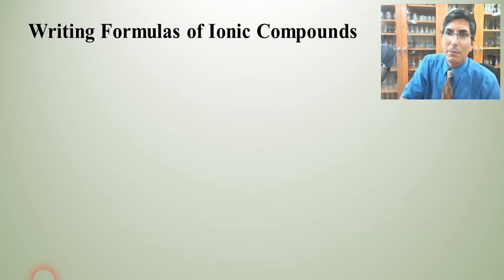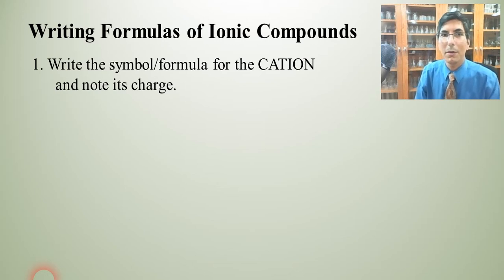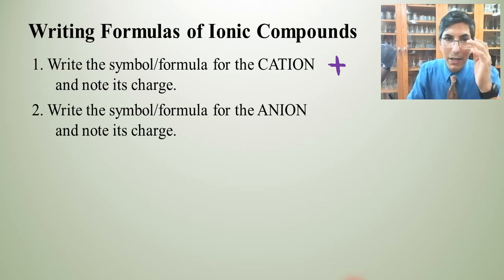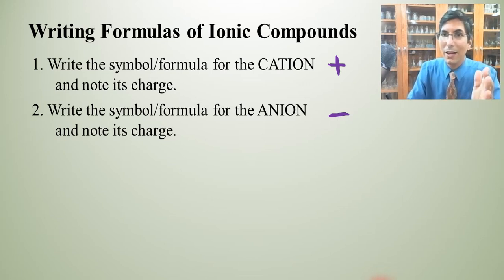Let's go on to something perhaps a bit more complex. We're going to write some formulas of ionic compounds. There are five steps involved. The first step is to write the symbol or the formula for the cation and note its charge. Cations are always positive in nature and they are also always written at the beginning of a compound or the beginning of a name. The second step is to write the symbol or the formula for the anion and note its charge. Anions are always negative in charge and they always go at the end of a formula and the end of a name.